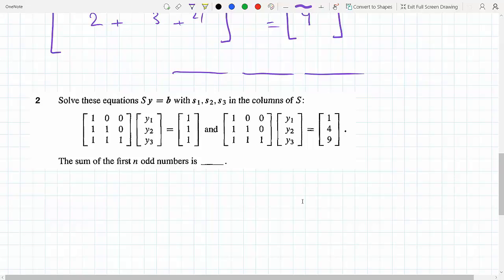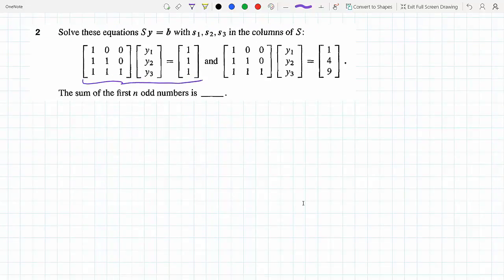We need to solve both of these equations Sy equals B. For the first set it's straightforward. If I consider this and perform matrix multiplication, the first equation would get me 1y1 plus 0y2 plus 0y3, because this is how we multiply a matrix row times column.